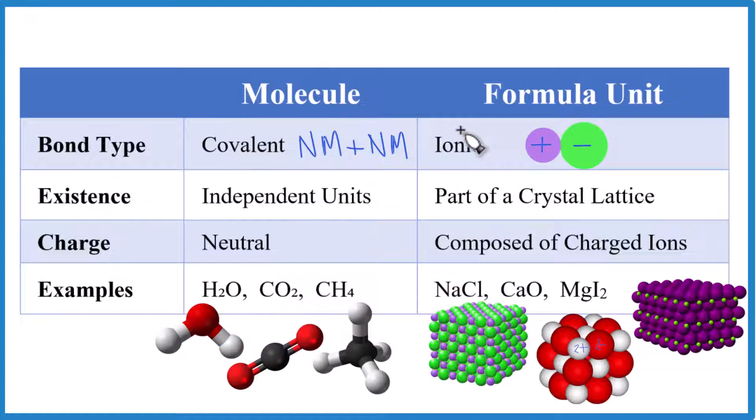For our formula unit, we have ionic bonds. That's made up of a metal and a nonmetal. And they're ionic bonds. They're made of positive and negative ions. So this right here is a formula unit from NaCl down here. So they're part of a bigger crystal lattice. You won't have just one formula unit by itself. It's always in a crystal. And because it's ionic, we have charged ions, positives and negatives, where for the molecule, these will be neutral.